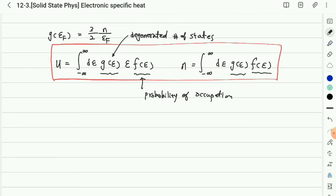Before calculating the electronic specific heat, we need a mathematical foundation. For the calculation of the electronic specific heat, we need the Sommerfeld expansion, and here I will introduce the Sommerfeld expansion.